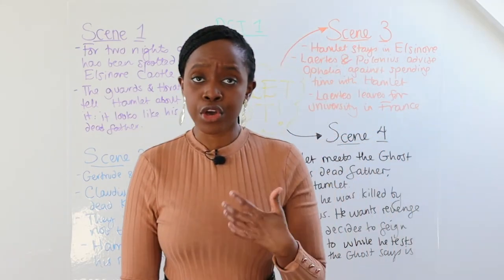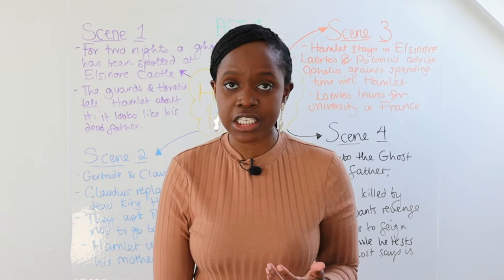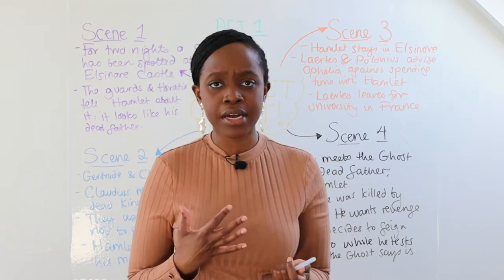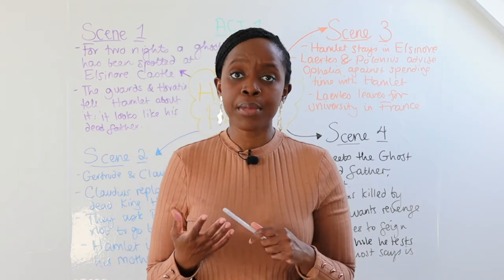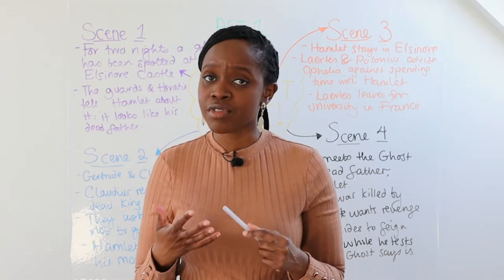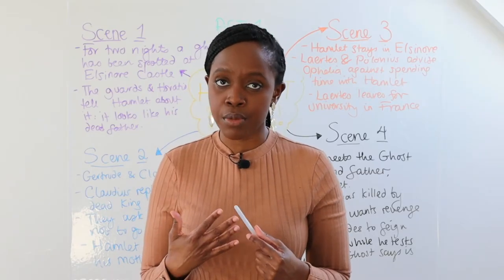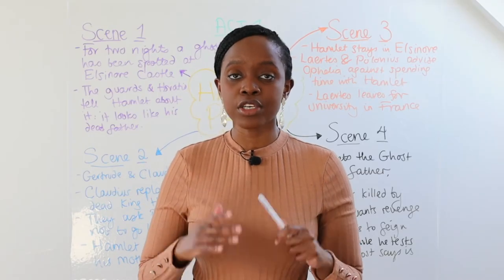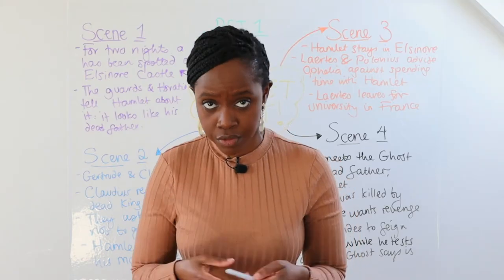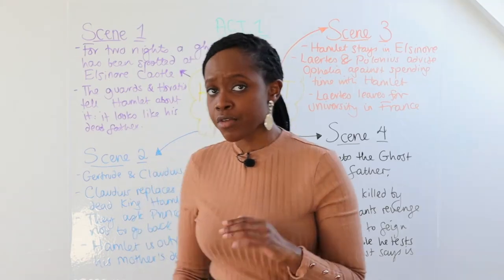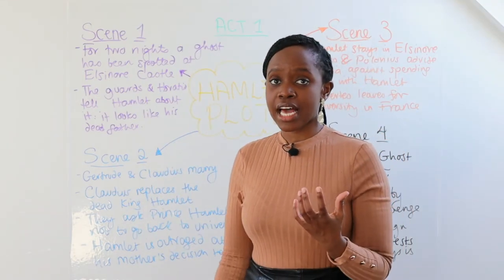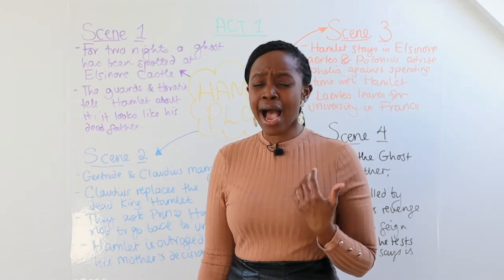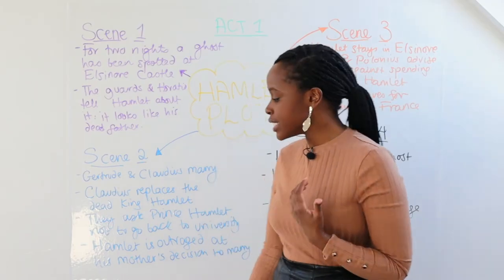Claudius and Gertrude ask Prince Hamlet — who goes to Wittenberg University — to stop being so melancholic and sad about his father's death. They also tell him it's not a good time for him to go back to university and ask him to stay at the castle, which he agrees to.